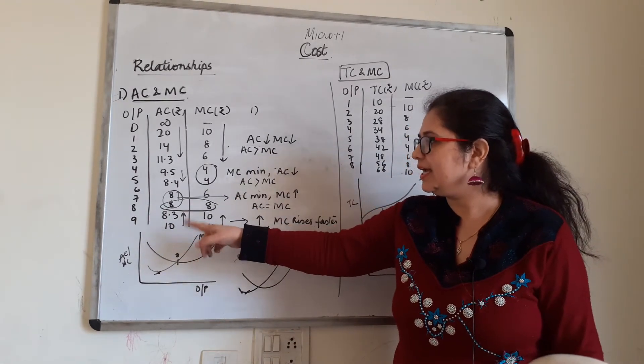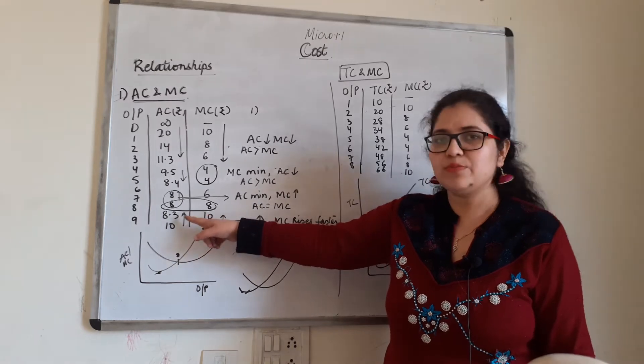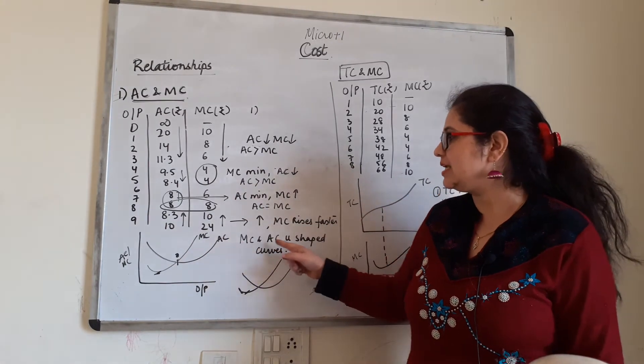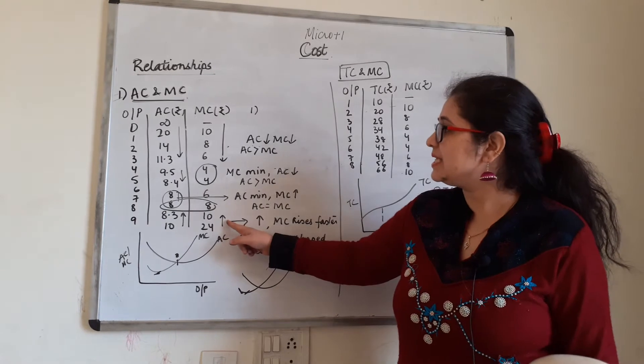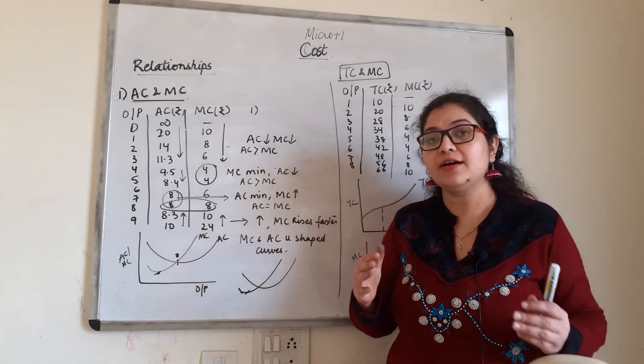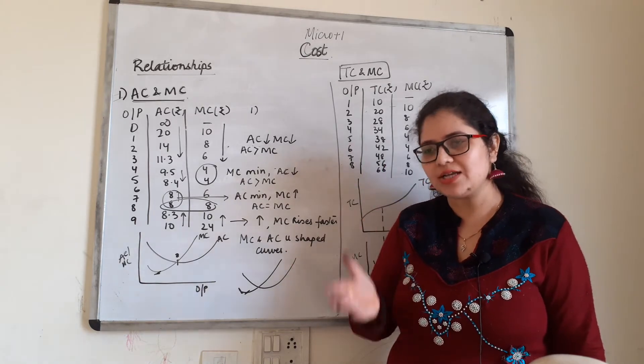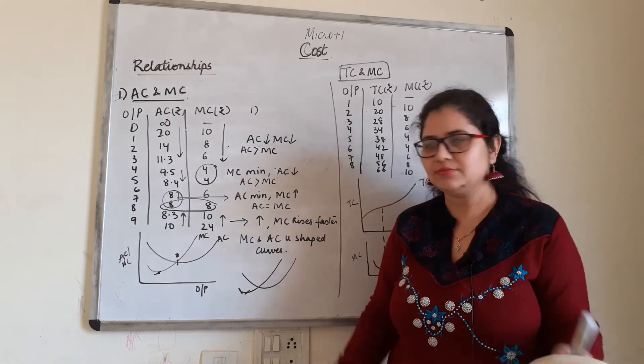Finally, ninth and tenth unit, what is happening is MC is rising, AC is rising, but MC is greater than AC. Because I just said that MC's curve rises faster, AC is slower. So MC is faster than AC. Clear? Relationship done.